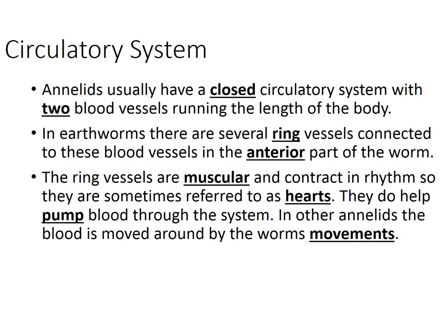Regarding circulatory systems, annelids have a closed circulatory system with two blood vessels running down the length of their body. Instead of one heart, they have ring vessels called aortic arches that have a rhythmic pumping or contraction — sometimes referred to as their hearts — that help pump blood throughout their bodies. In some annelids, the movement of the body itself also helps move blood through them.